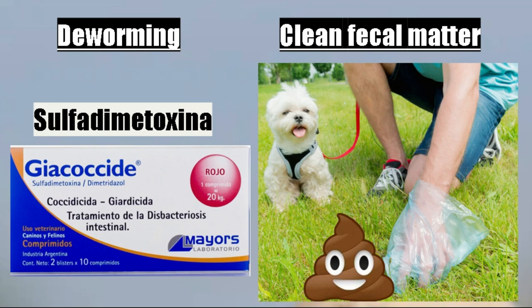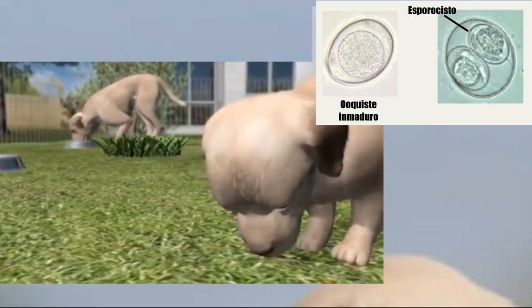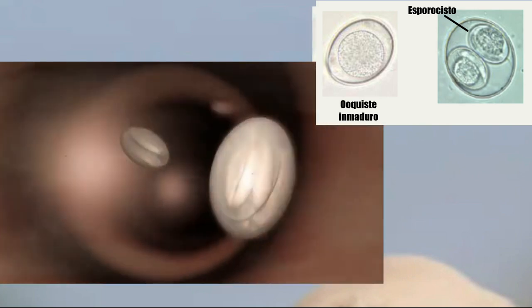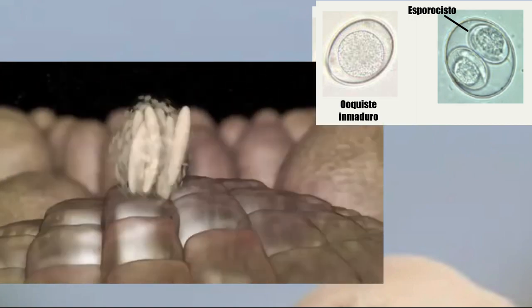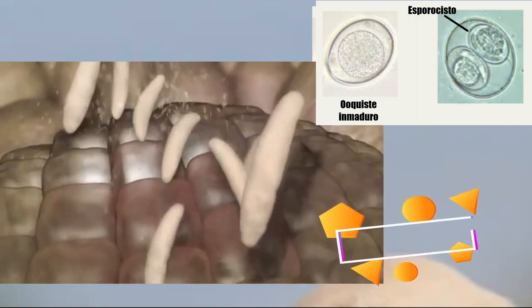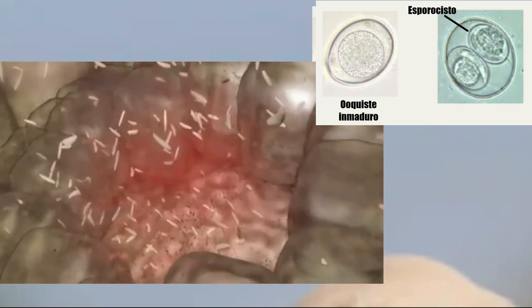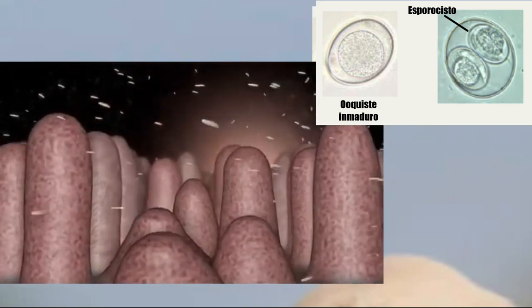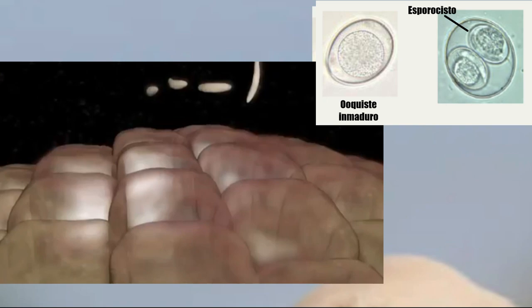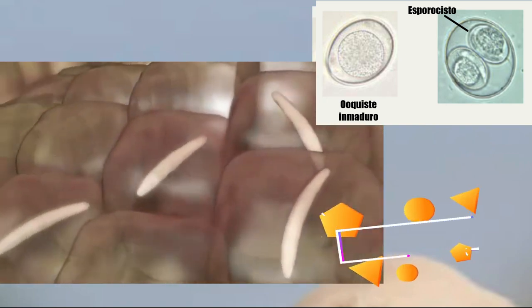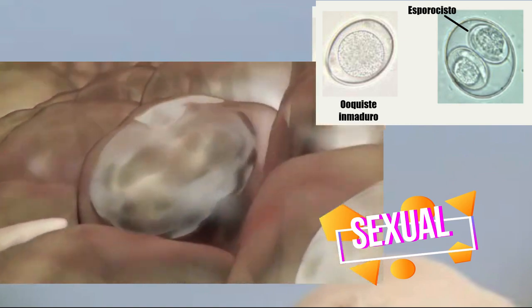Let's go through the cycle: a sick puppy releases an immature oocyst into the environment. This immature oocyst passes into a mature oocyst and will be ingested by another puppy. In the puppy, the coccidium will reproduce in the intestinal wall — first through asexual reproduction and then sexual reproduction. After sexual reproduction, we will have an immature oocyst that passes back into the environment.